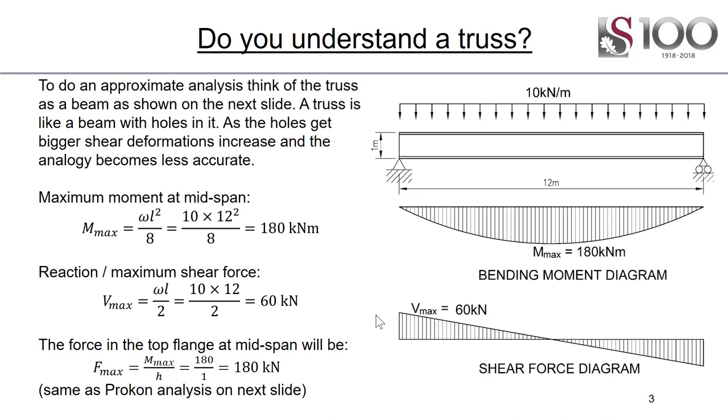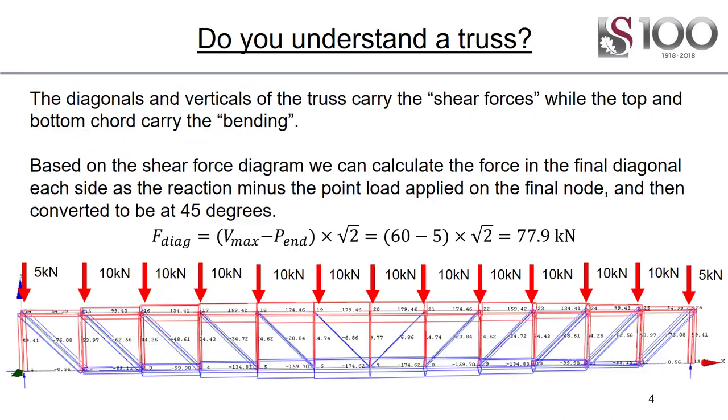If we take the depth of the truss as being 1 meter and force times distance, at the midspan we will have a bending moment of 180 kilonewton meters. Depth 1 meter times force in top cord, so we can determine the approximate maximum force in the top cord as 180 kilonewtons, dividing the bending moment by the depth of the truss. The diagonals and verticals carry the shear forces while the top and bottom cords carry the bending.